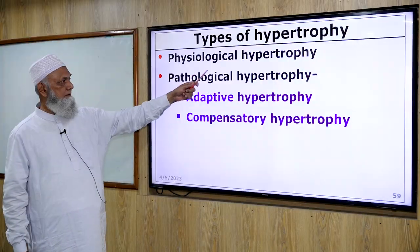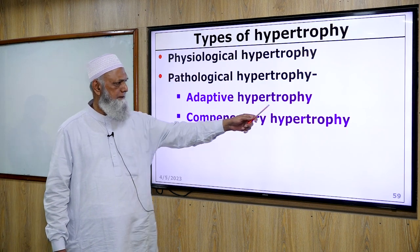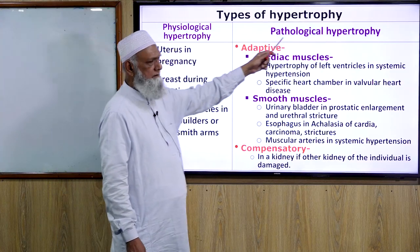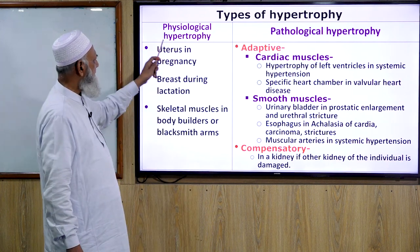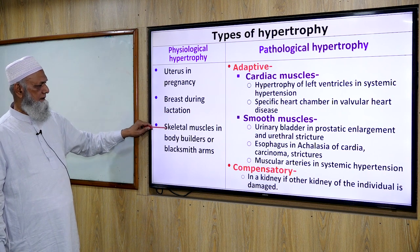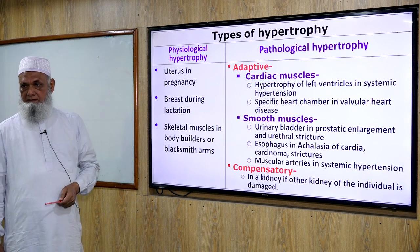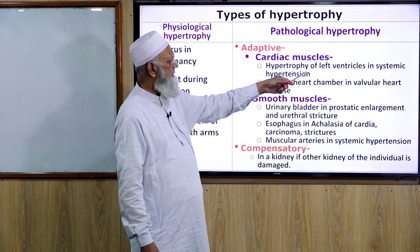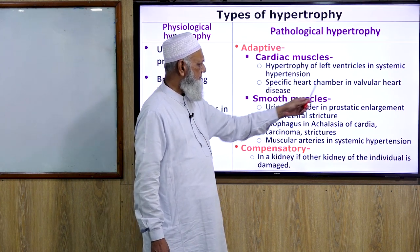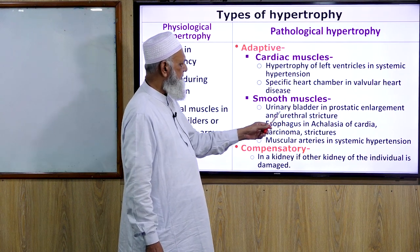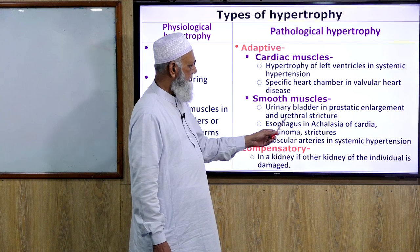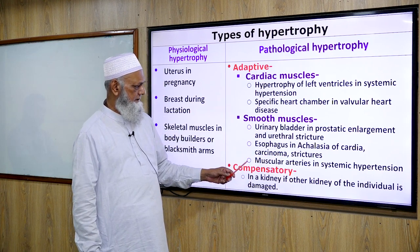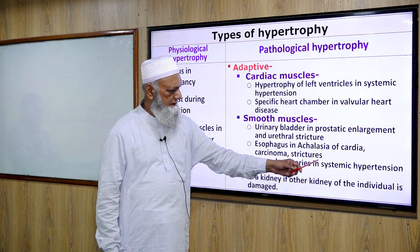Types of hypertrophy: physiological hypertrophy and pathological hypertrophy. Pathological hypertrophy is further divided into adaptive hypertrophy and compensatory hypertrophy. Physiological examples include uterus in pregnancy, breast during lactation, and skeletal muscle in bodybuilders. Pathological cardiac muscle hypertrophy includes hypertrophy of the left ventricle in systemic hypertension and specific heart chambers in valvular heart disease. Smooth muscle hypertrophy includes urinary bladder in prostatic enlargement, esophagus in achalasia of the cardia, and muscular arteries in systemic hypertension.